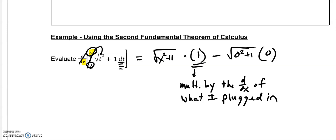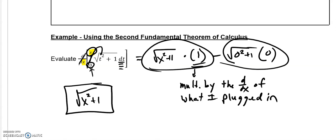So, if you have a constant in the bottom, you'll never have to worry about this second part, because it will always be 0. Now, when we simplify this, you would have the square root of x squared plus 1, and then that is, using the second fundamental theorem of calculus, our answer for this particular question.